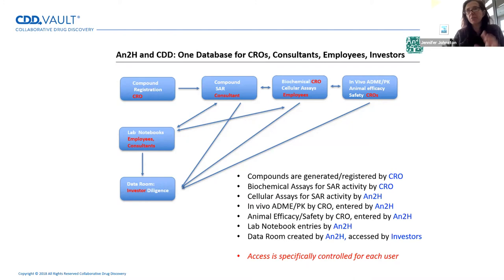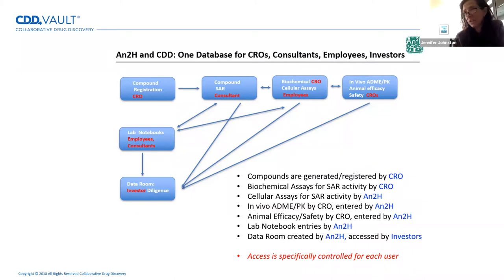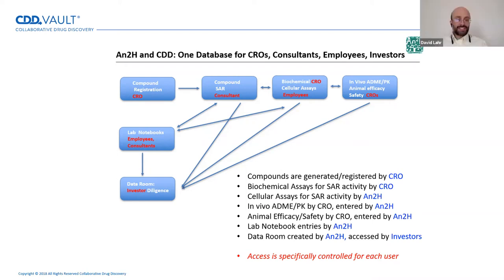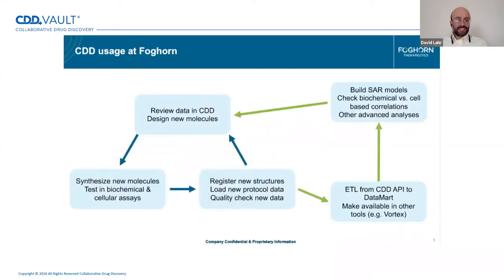Having a one-stop shop for our data really saves a lot of time and energy as well as increasing compliance. Moreover, it's completely searchable, so I spend much less time trying to remember who, when, and where specific data was generated and where to find it. For you guys at Foghorn, how does CDD help with your drug discovery efforts? It's pretty similar at a high level to what you described, Jennifer, although I don't think we're quite as extensive with the data room usage — that's kind of neat.